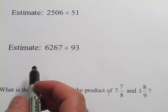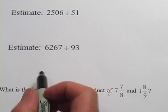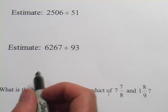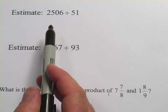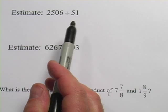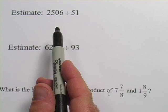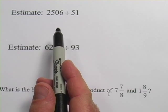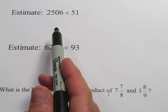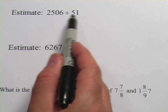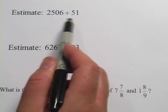In these problems, we're being asked to estimate an answer. And this is tricky because if you just pull out your calculator and do this, 2,506 divided by 51, you're probably going to get the wrong answer. You're probably going to choose an answer choice that's not right, even though if you were going to do this accurately, instead of estimating, you would be right.